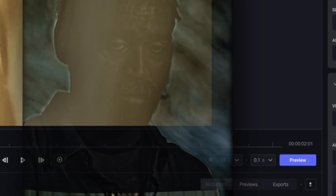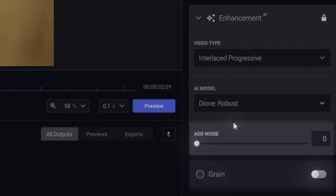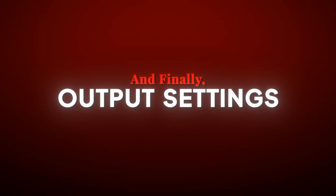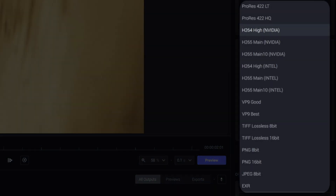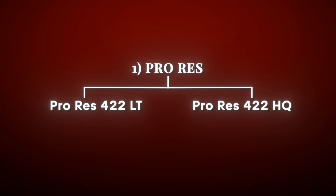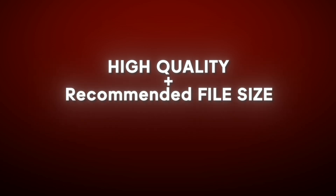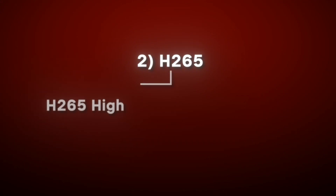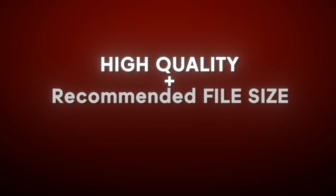Output settings — no need to make any changes to noise and grain. In the encoder, there are many options. You can choose ProRes, which is high quality and high file size. Next is H.264 — high quality and recommended file size. There is also MKV format and H.265 format, which comes in two types — high quality and recommended file size. MP4 format has the most options available.